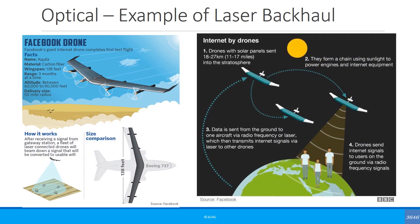Facebook is working on a drone called Aquila with a similar concept. When the drones communicate with each other, they use laser backhaul, and when they connect to the earth station, they also use laser. When the drones transmit to users, they transmit through radio signals, as there is no other option.